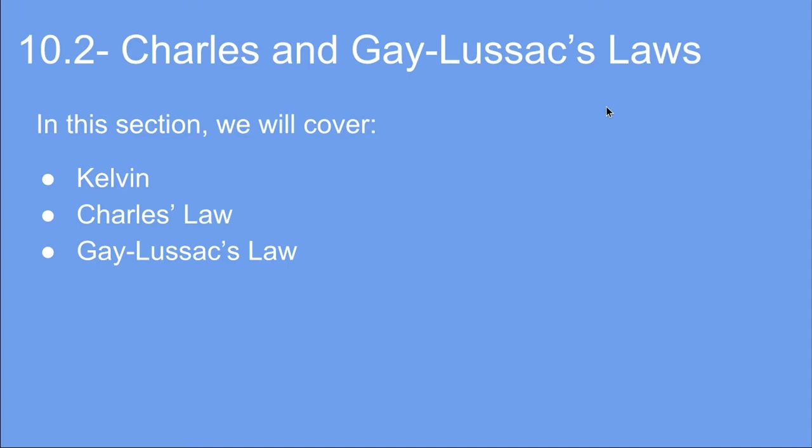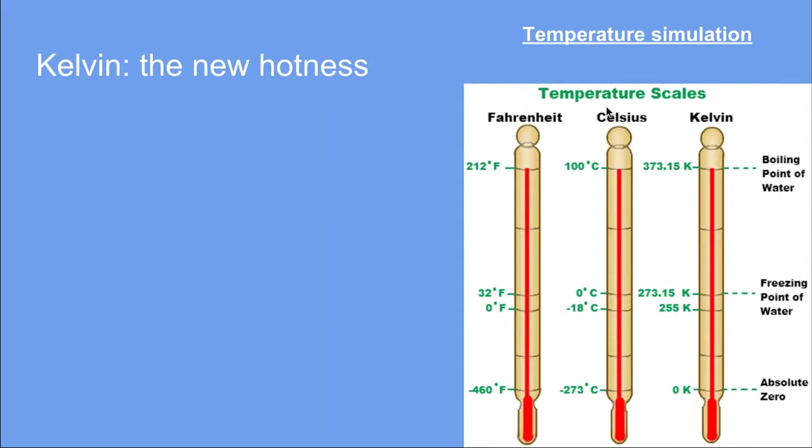So let's start with Kelvin. Since it's a very important concept for our next laws, we're dealing with temperature. Kelvin is a unit of temperature, and it's actually very similar to the Celsius scale, because a change in 10 degrees Celsius is the same as a change in 10 degrees Kelvin. They're worth the same amount, but what's different is the scale that we're dealing with.